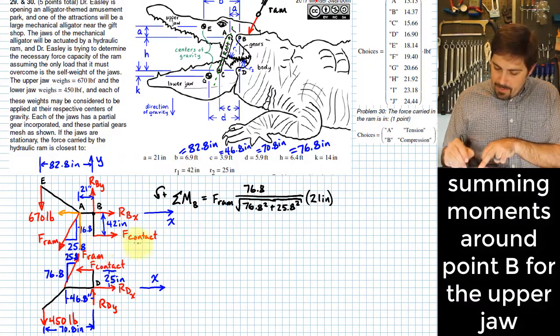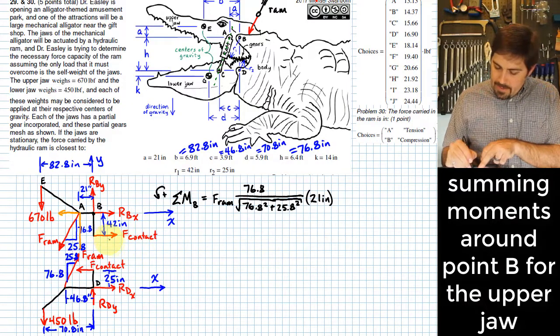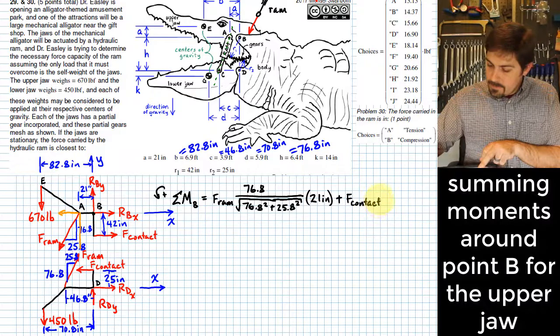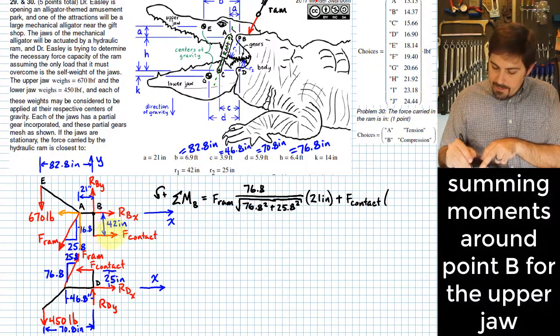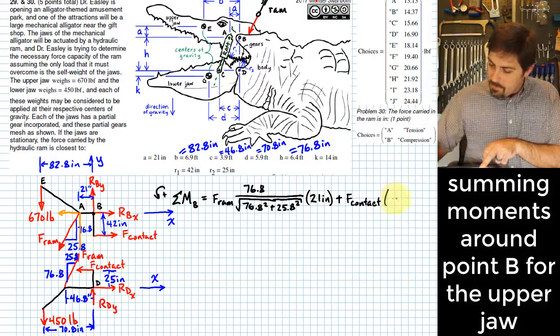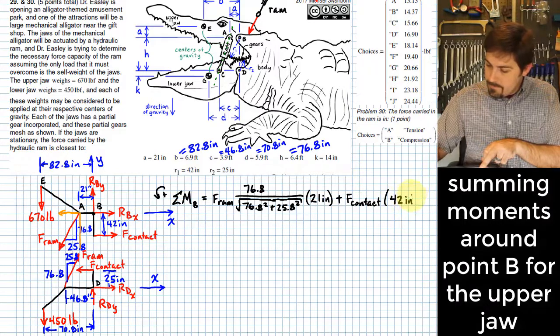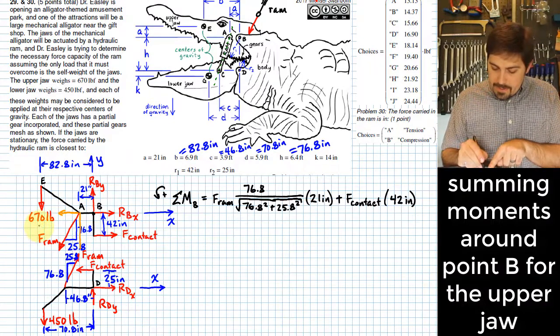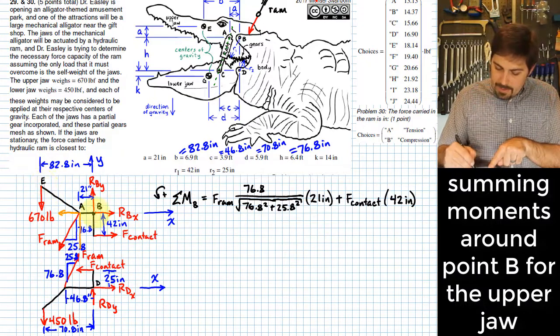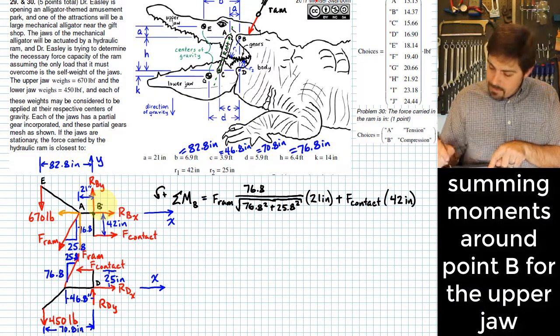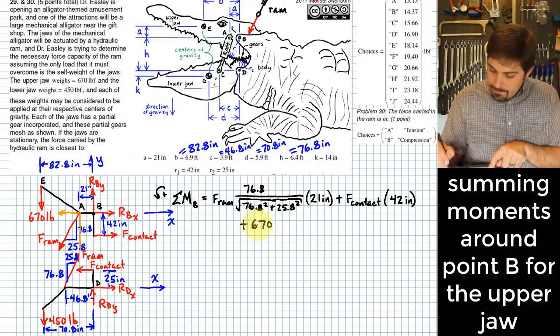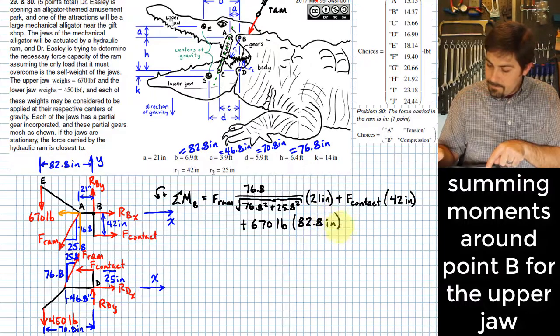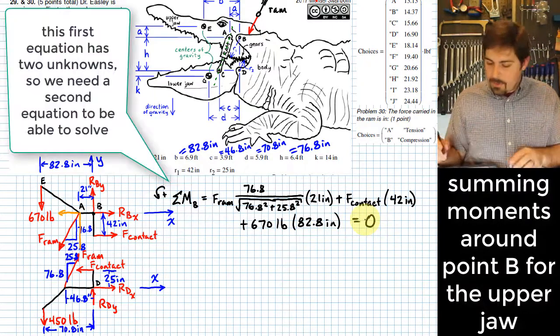Now I need to look at my contact force, F-contact. And it is going to also create a counterclockwise tendency to rotate, so I will add F-contact multiplied by its length from its line of action to point D. And that would be 42 inches. So far that's taken care of those two, the last one that I need to work on is the 670 pound force, so it would tend to create a counterclockwise tendency to rotate as well, so I would add 670 pounds multiplied by 82.8 inches. And that takes care of all of my forces that would create moments around point B.